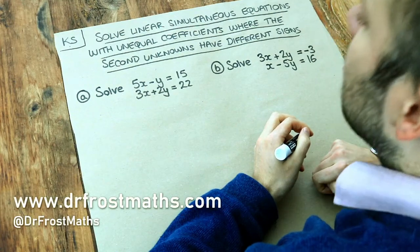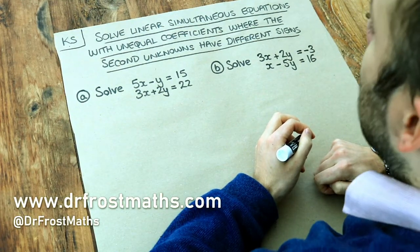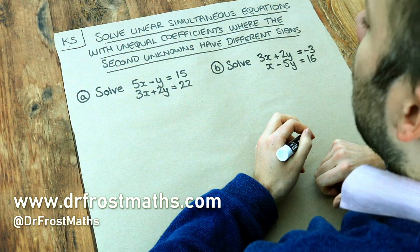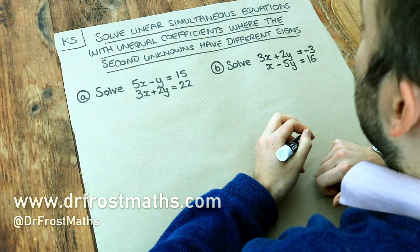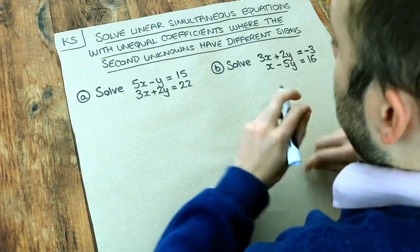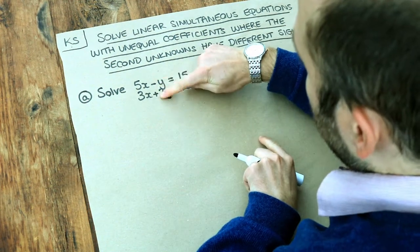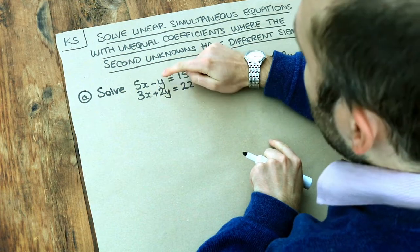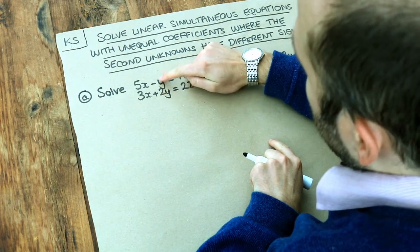Hello and welcome to this Dr. Ross Maths key skill video on solving linear simultaneous equations with unequal coefficients where the second unknowns have different signs. What I mean by that is we've got different signs in front of say the y term here, and they're different numbers as well.